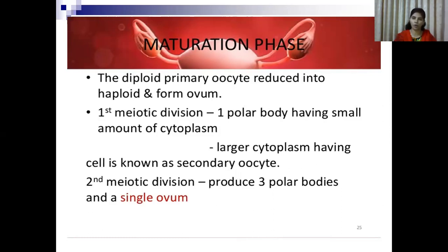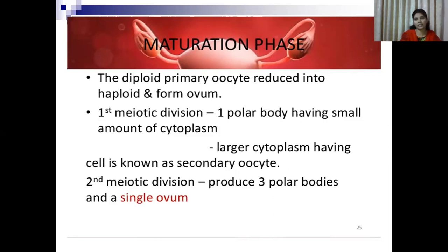Why is only one functional ovum produced? If division were equal, the cytoplasm and yolk would be divided equally into four cells, and that amount of yolk would not be sufficient for further embryonic development. In spermatogenesis, four equal divisions occur because sperm is microscopic and does not need to carry yolk. But in oogenesis, only one ovum is produced containing 100% of the yolk, which has the full capability to nourish subsequent embryonic stages. This is the key difference between oogenesis and spermatogenesis.